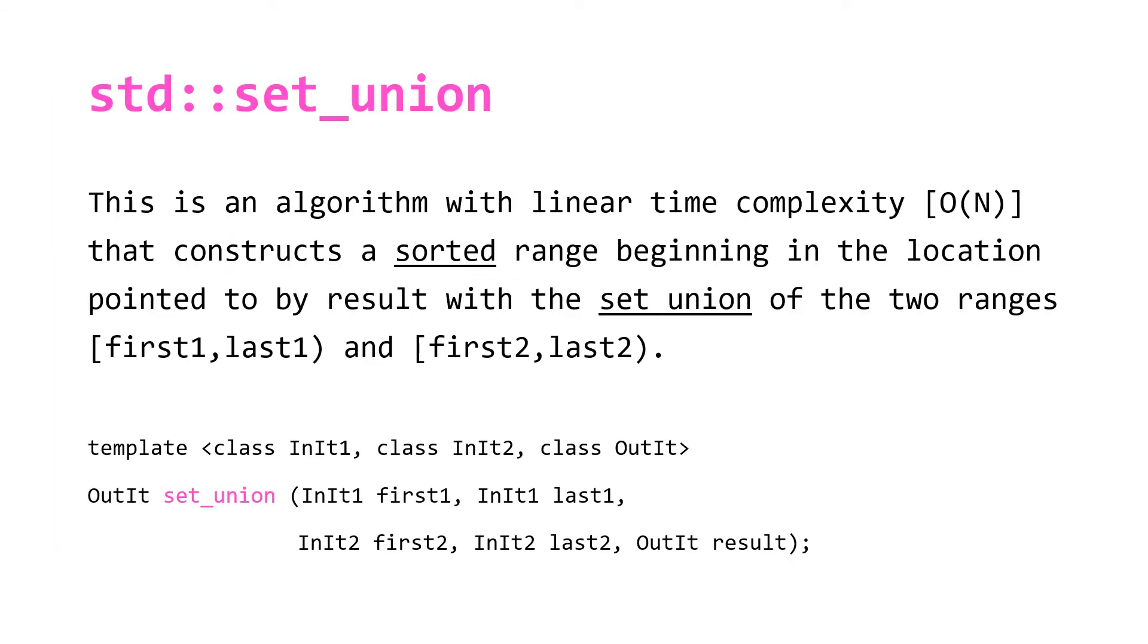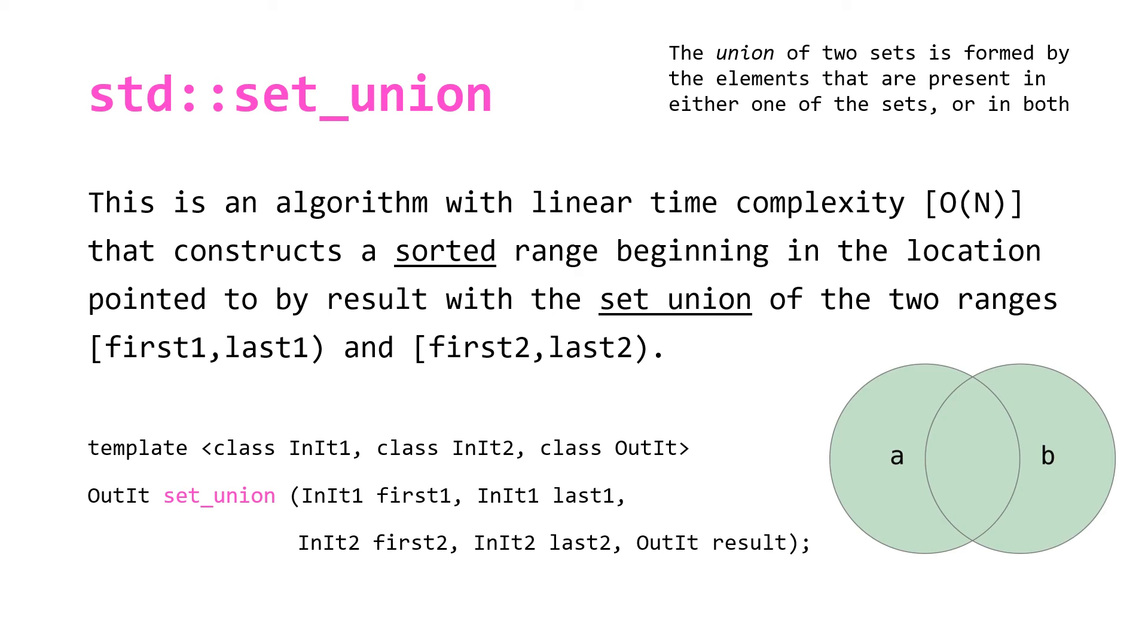For std::set_union, we have an algorithm with linear time complexity [O(N)] that constructs a sorted range beginning in the location pointed to by result with the set union of the two ranges [first1,last1) and [first2,last2). The union of two sets is formed by the elements that are present in either one of the sets or in both.